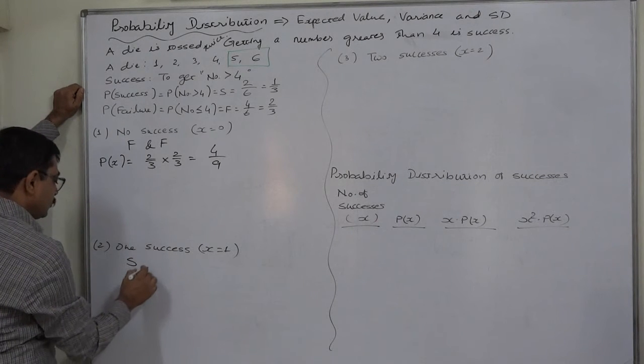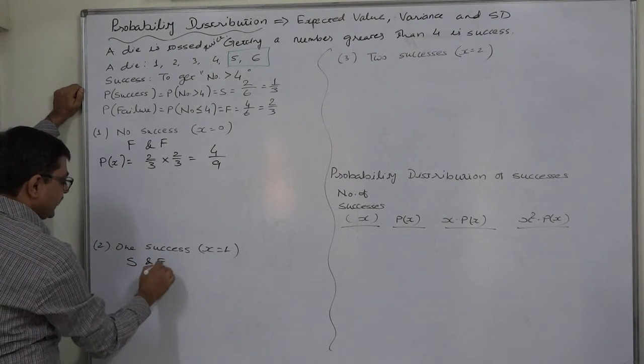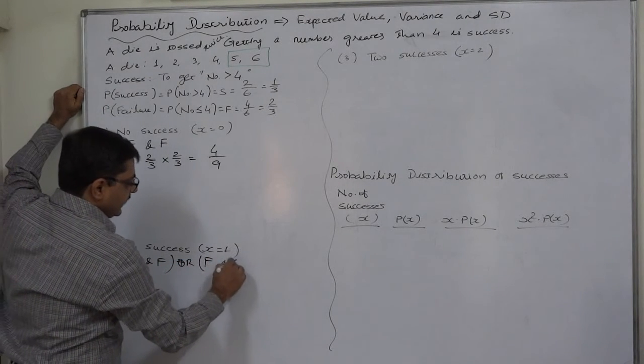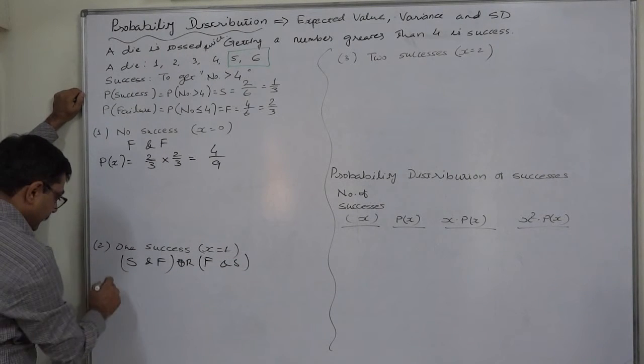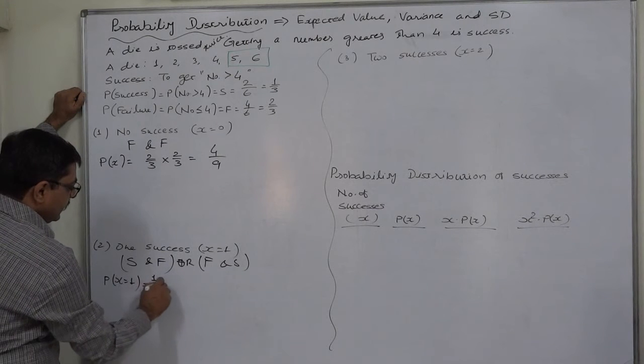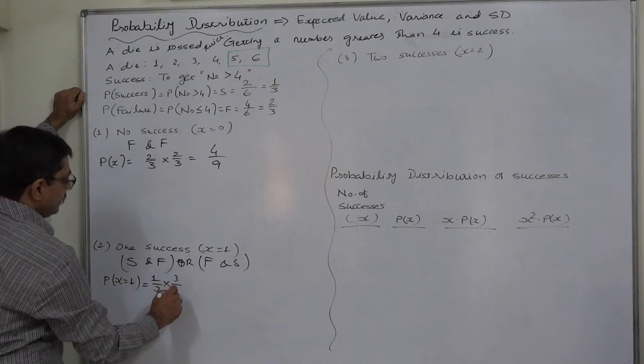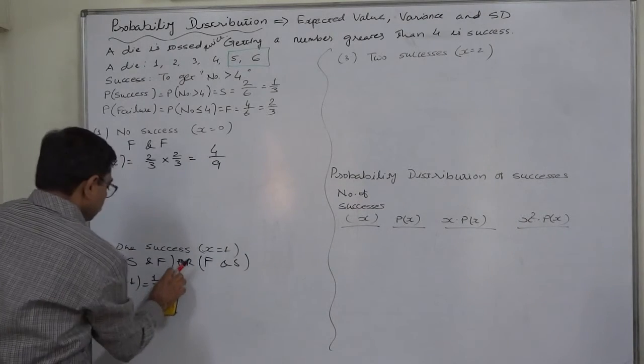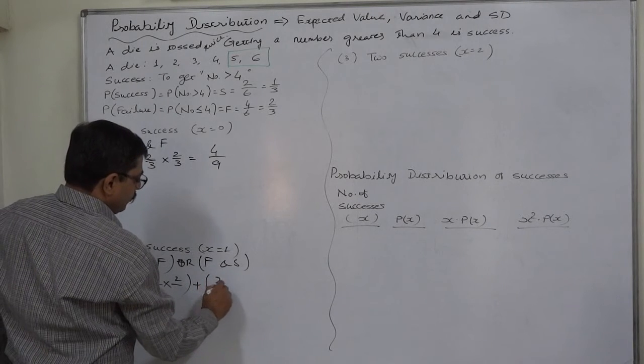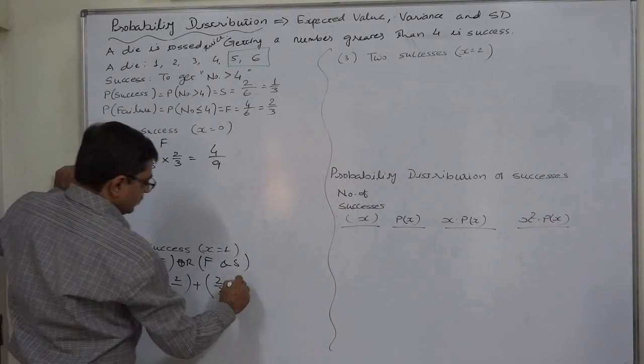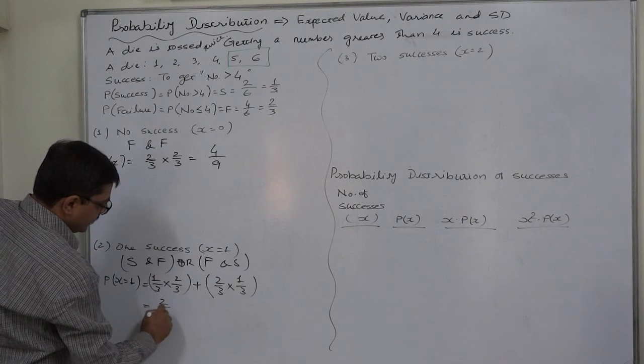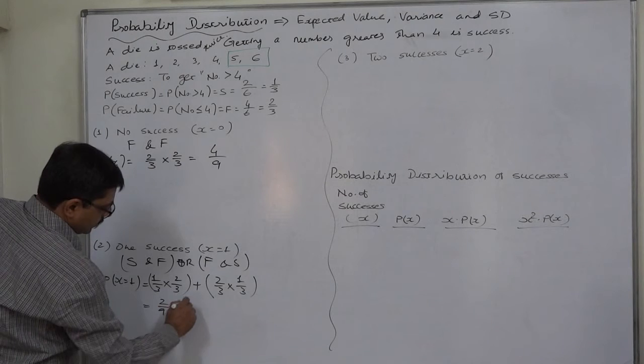One success: in how many ways is one success possible? It is possible in these two ways—success in first trial and failure in the second, or failure in the first trial and success in second. So the probability will be success, that is 1 by 3, into failure, 2 by 3, and failure, 2 by 3, into success, 1 by 3. So it is 2 by 9 plus 2 by 9, that is 4 by 9.